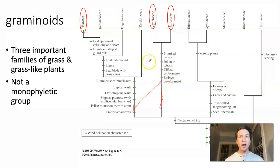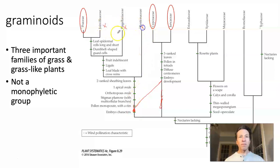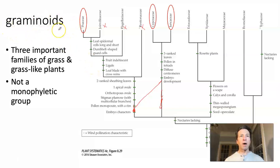If we follow back to the most recent common ancestor of those three families on our simplified tree, and then follow forward in time, we see that the group graminoids does not include the common ancestor and all of its descendants, because it leaves out three families. Consequently, graminoids are paraphyletic, and we are going to talk about them because they are convenient, but not because they are monophyletic.